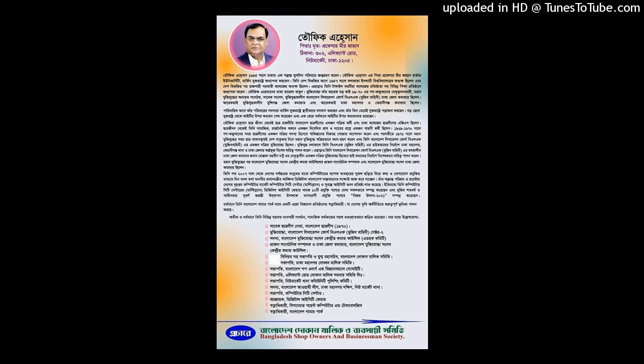Legislative: the bicameral Congress, made up of the Senate and the House of Representatives, makes federal law, declares war, approves treaties, has the power of the purse, and has the power of impeachment, by which it can remove sitting members of the federal government. Executive: the President is the commander-in-chief of the military, can veto legislative bills before they become law, subject to congressional override, and appoints the members of the Cabinet, subject to Senate approval, and other officers who administer and enforce federal laws and policies. Judicial: the Supreme Court and lower federal courts, whose judges are appointed by the President with Senate approval, interpret laws and overturn those they find unconstitutional.